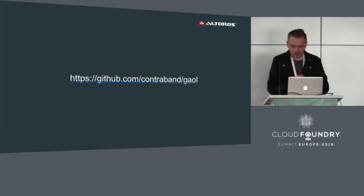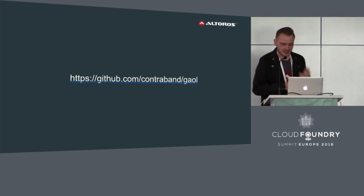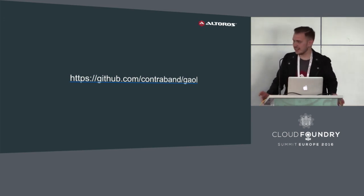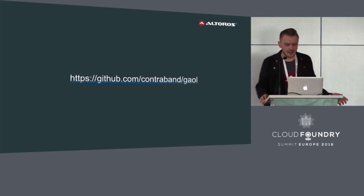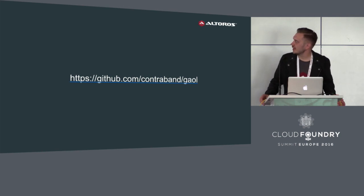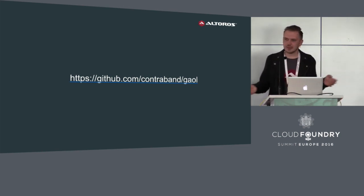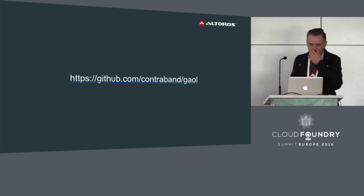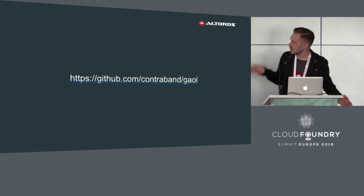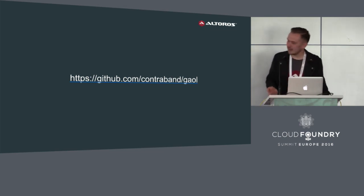For those who want to debug the container manager itself, not the application inside the container, I recommend taking a look at this tool — basically a CLI for Garden. You can create and delete containers, shell into them, and do many other things that Diego does. For example, if you have a single Diego cell and Garden doesn't work, you can use this tool to connect and debug it.